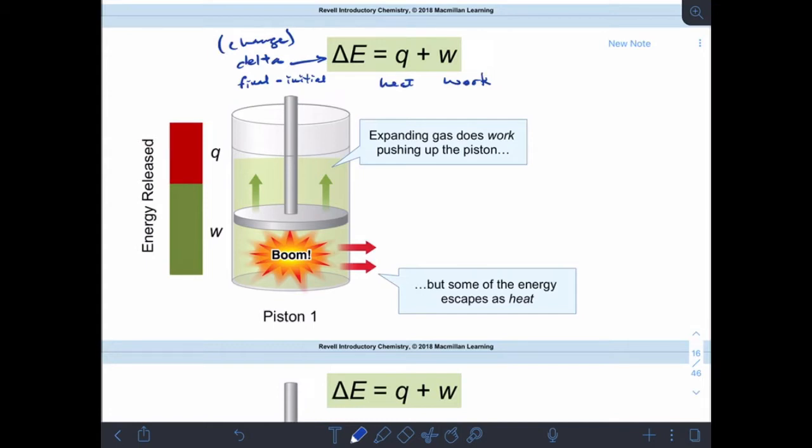Okay, so in this example here, if we have, for example, like the piston in a car engine, you have a small explosion inside that piston, and it causes the piston to move up. So if our boom is our system, that means that heat is coming out of the system. So negative Q, and it's pushing against that piston.